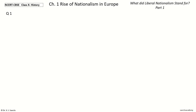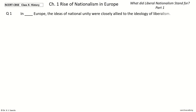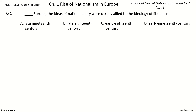Question 1. In dash Europe, the ideas of national unity were closely allied to the ideology of Liberalism. The options are: late 19th century, late 18th century, early 18th century, early 19th century.